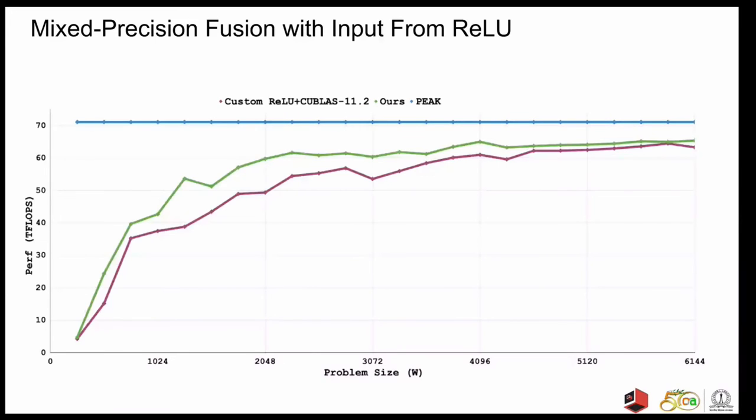It is also possible to fuse pointwise operations when they are present on the inputs to the matmul. We present the results when ReLU is applied on the C input of matmul. The gains that we see are up to 1.33 times of the non-fused counterparts.